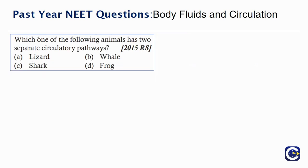Which one of the following animals has two separate circulatory pathways? The options given are Lizard, Whale, Shark, Frog.